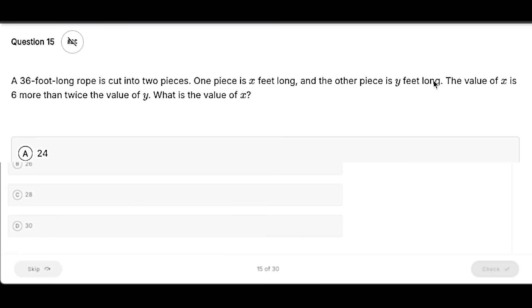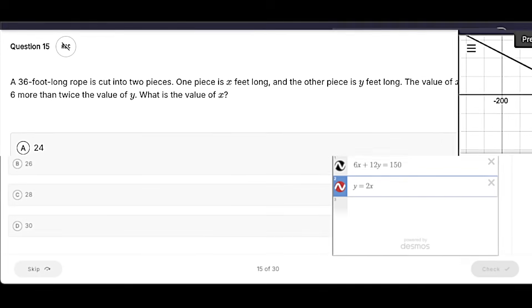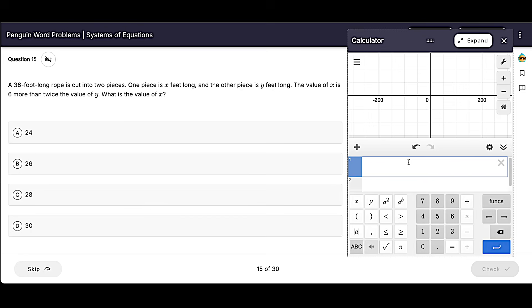So this seems to be items plus items equals items. If we add X and Y together, that's going to be the full length of X plus the full length of Y to get our 36 feet.